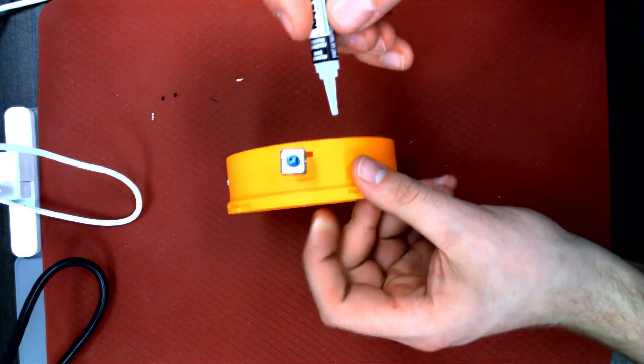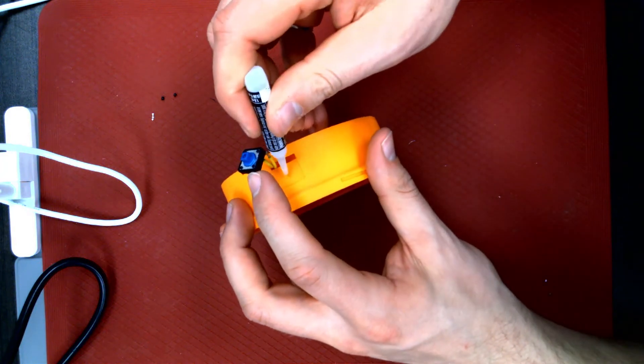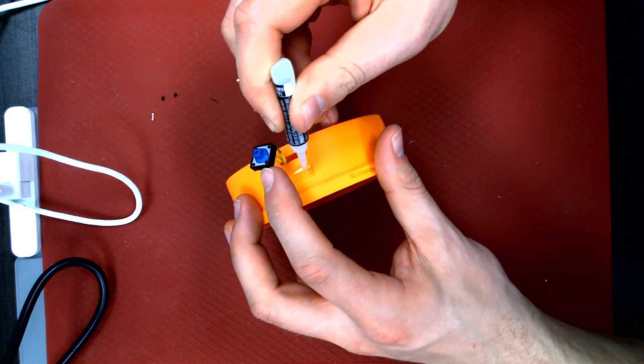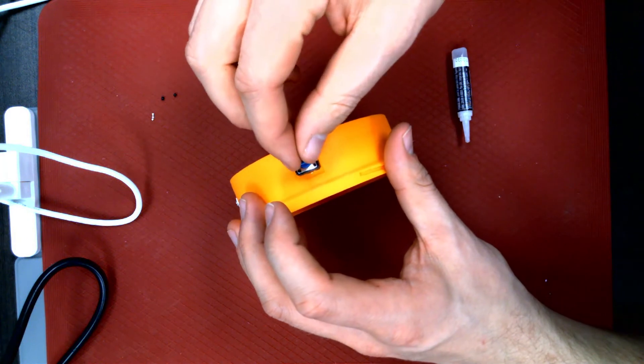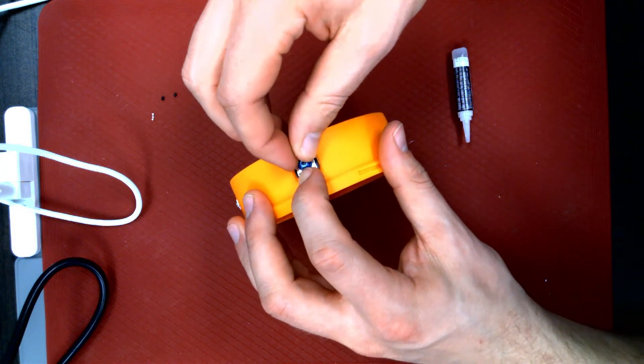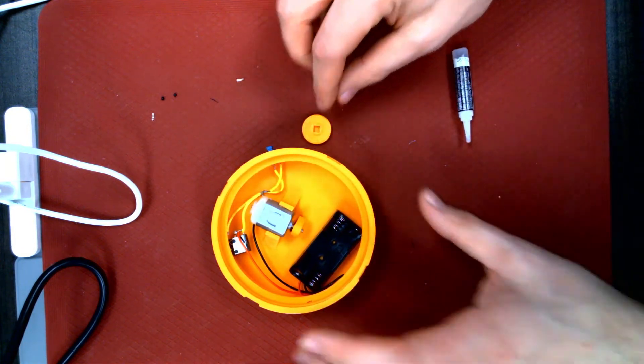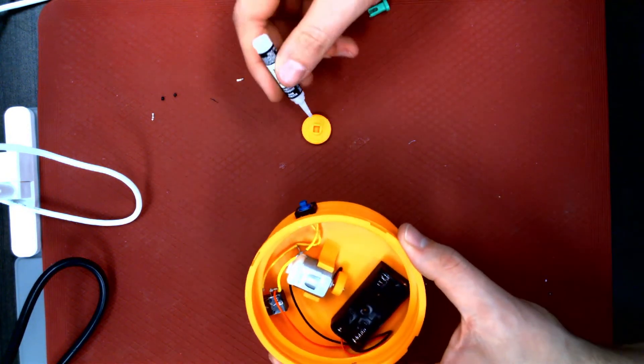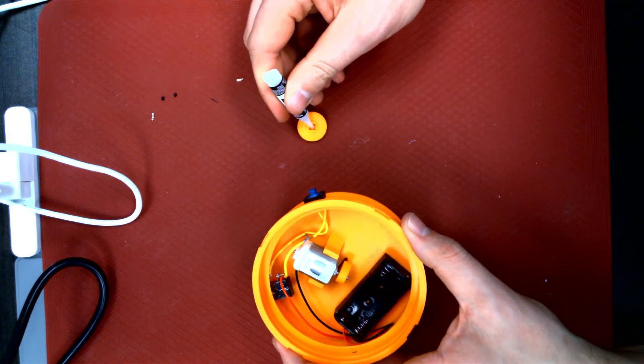Next, the switch gets glued into place in the square on the side of the base. Once the glue has dried, the button cap will be glued onto the switch. Be careful not to add too much glue here as this can damage the switch and prevent it from working.